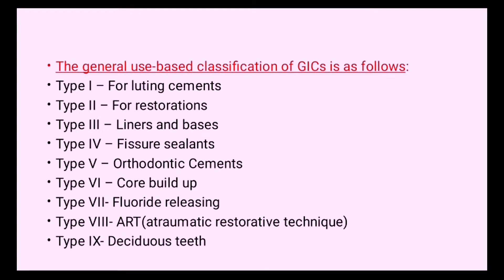The general use-based classification of glass ionomer cement is: Type 1 for luting cements, Type 2 for restorations, Type 3 for liners and bases, Type 4 for fissure sealants, Type 5 for orthodontic cements, Type 6 for core build-up, Type 7 fluoride releasing, Type 8 for ART (atraumatic restorative technique), and Type 9 for deciduous teeth.